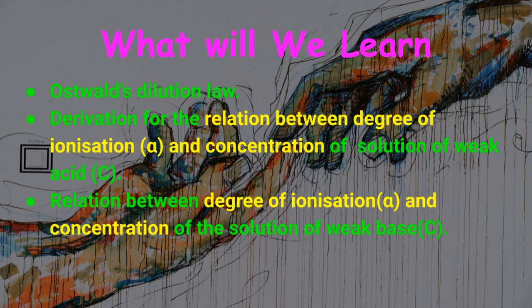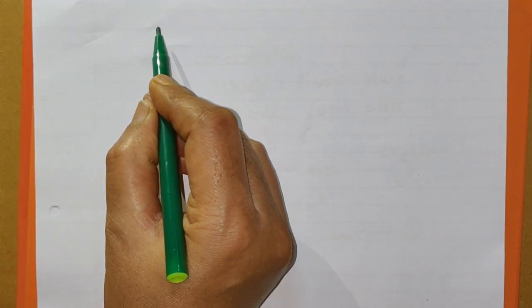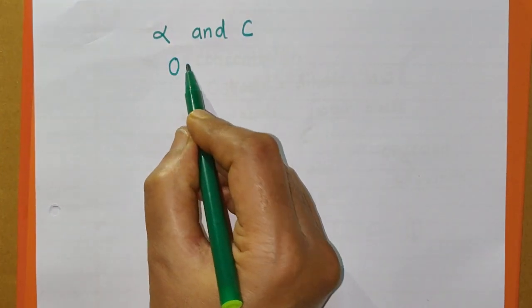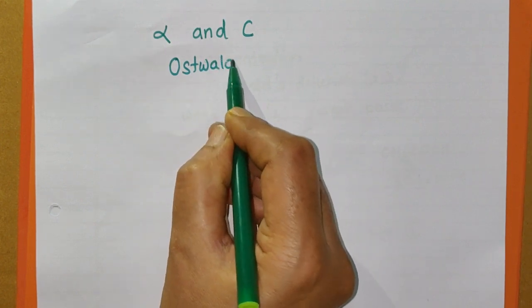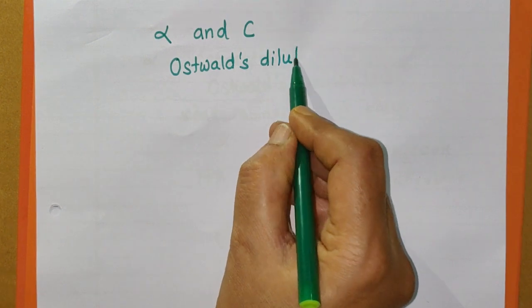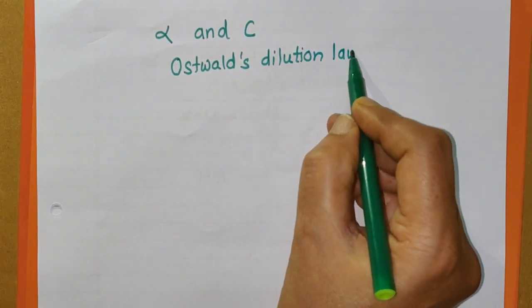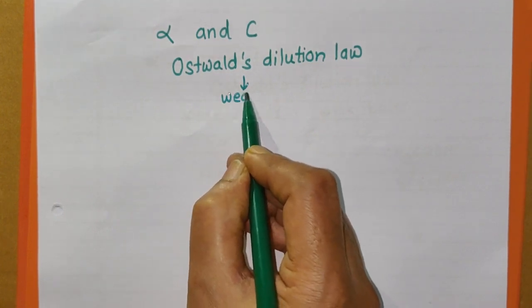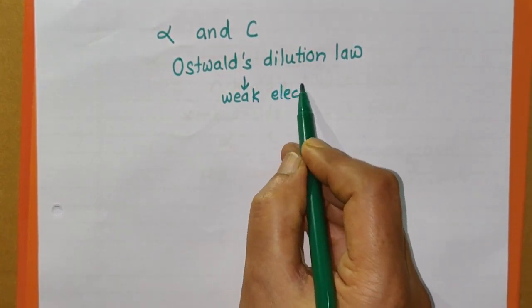In this video we shall learn what is Oswald's Dilution Law. Oswald's Dilution Law gives the relation between degree of ionization and concentration of a solution of weak acid or weak base. We will learn the derivation for the relation between degree of ionization and concentration of weak acid and weak base in detail. The mathematical expression between alpha and C was given by the scientist Oswald, and it is called Oswald's Dilution Law.